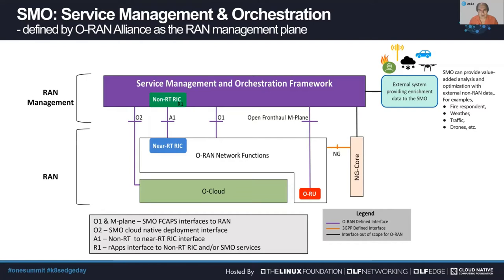Today's topic will focus on the network management functions for RAN. It is called the Service Management and Orchestration Framework, or SMO, in O-RAN. We'll talk about this new architecture, explain the new standard interfaces to the RAN network, and the challenges the operators and RAN vendors will face in the new world of Open RAN. Another benefit of the SMO is its external interfaces to utilize non-RAN data to further improve and optimize the RAN network.